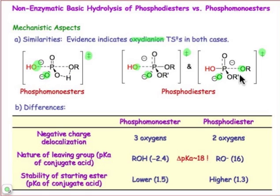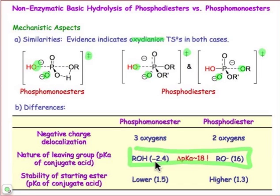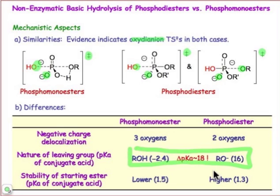As far as the difference goes, the key difference to emphasize is the pKa difference between the outgoing leaving groups. The main thing is: we have a neutral alcohol as the leaving group in the case of the phosphomonoester, whereas the leaving group for phosphodiesters must be the alkoxide. Above all else, this is the main point to keep in mind. It is the reason DNA is stable, as opposed to phosphomonoesters, which are not stable.